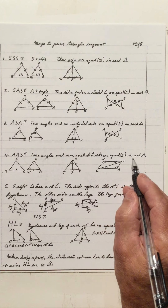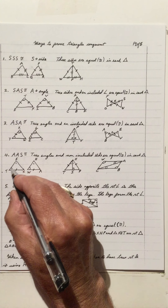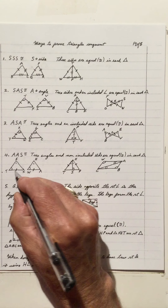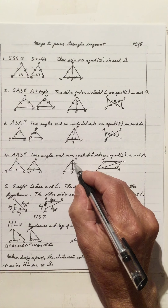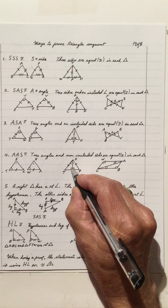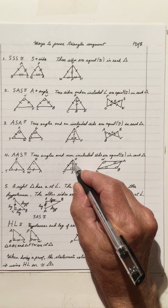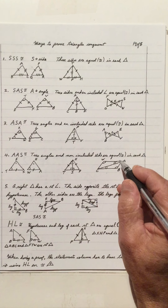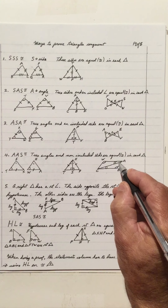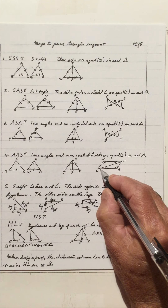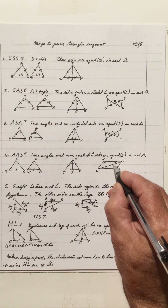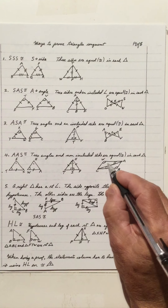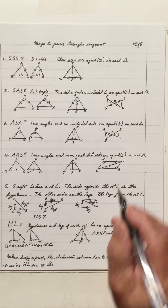AAS: two angles and a side that is not included are equal. These two angles are equal to these two, but this side is not included — so AAS congruency. Here we have a right angle on one and a right angle in the other triangle, so these two angles are equal, these two angles are equal, and these two sides are marked equal — an AAS. We also have angle W equals angle B, angle WAS equals angle BCA, marked doubles. CA equals AC, common to both triangles — angle, angle, side.